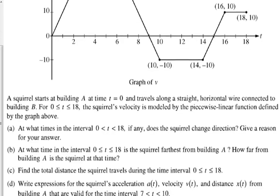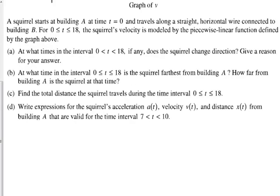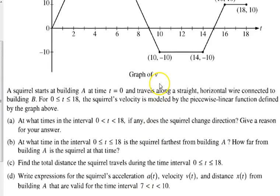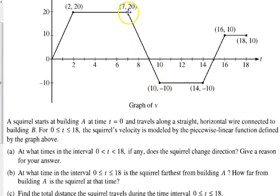Total distance, we know that that's the absolute value of the velocity, so you are going to calculate all that in part B. All you have to do is make this negative distance up here positive and you've got part C. Okay, let's look at part D. Write expressions for the squirrel's acceleration, velocity, and distance from the building A that are valid for the time interval between 7 and 10. So let's look at what's going on on our graph between 7 and 10.